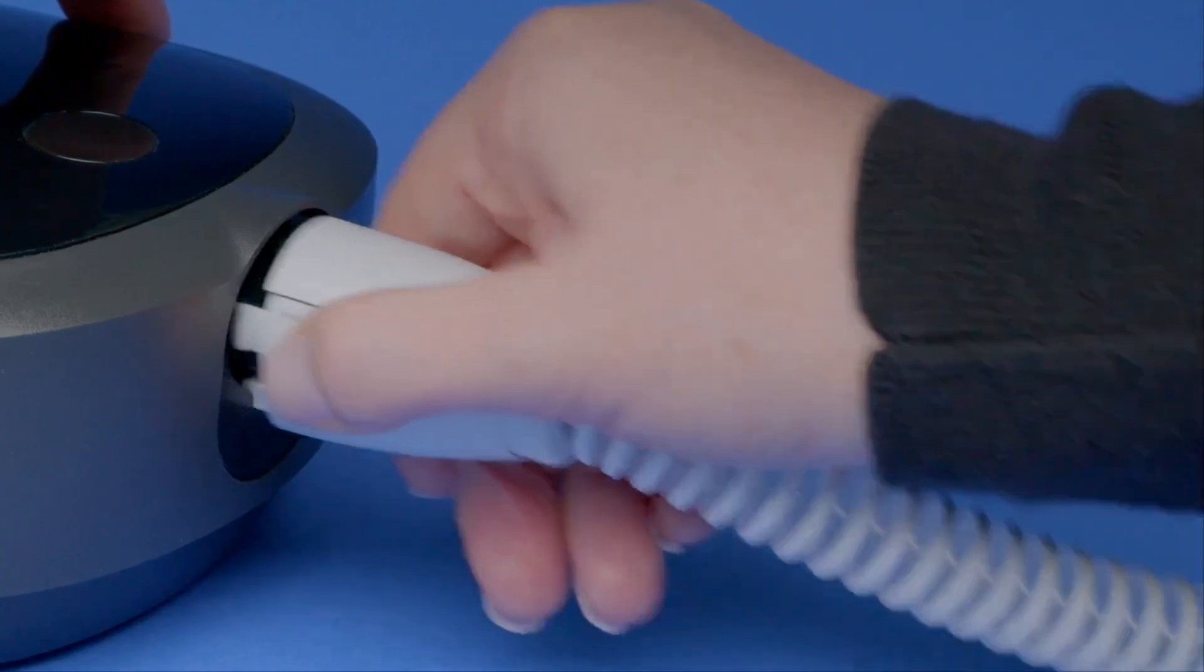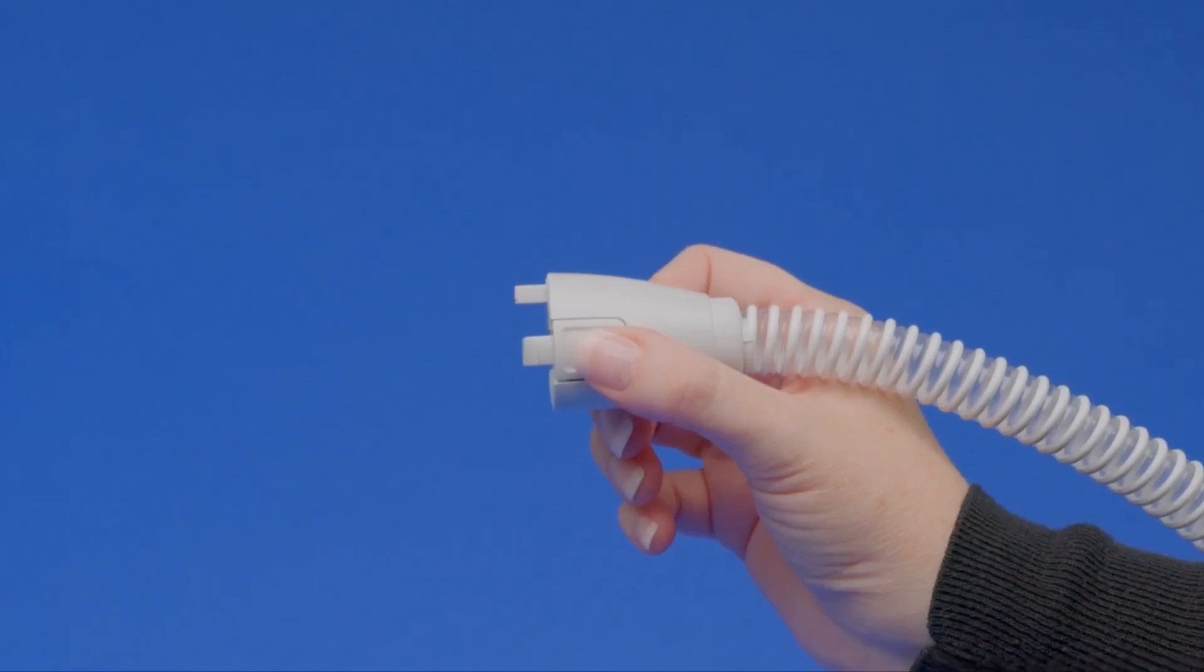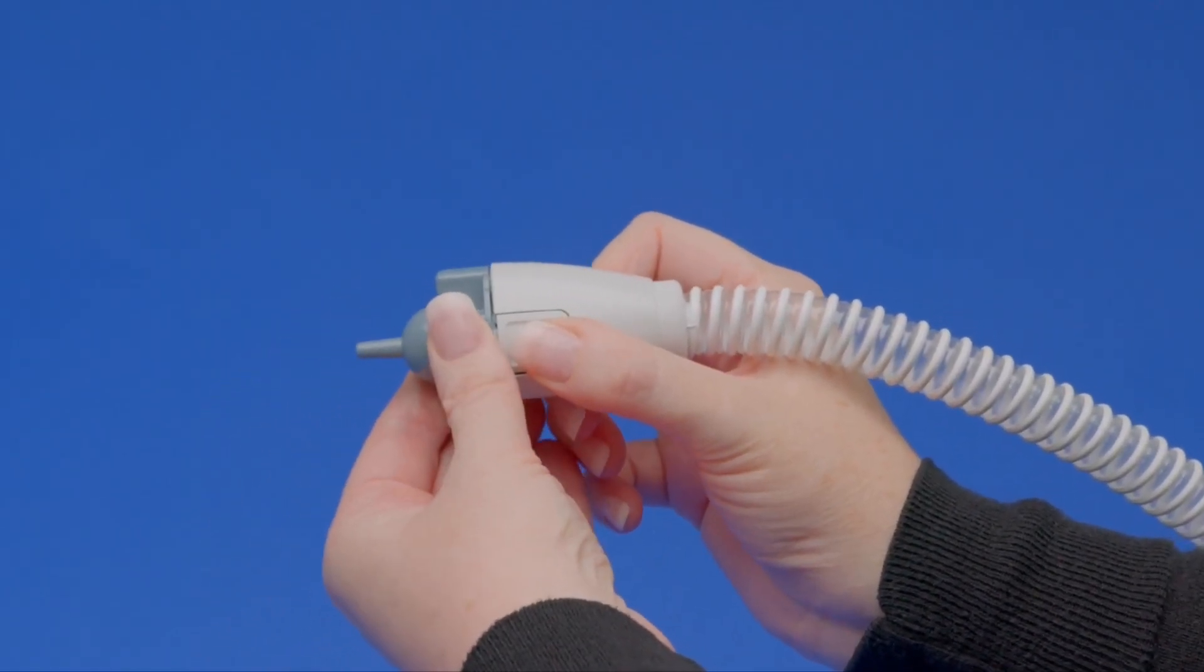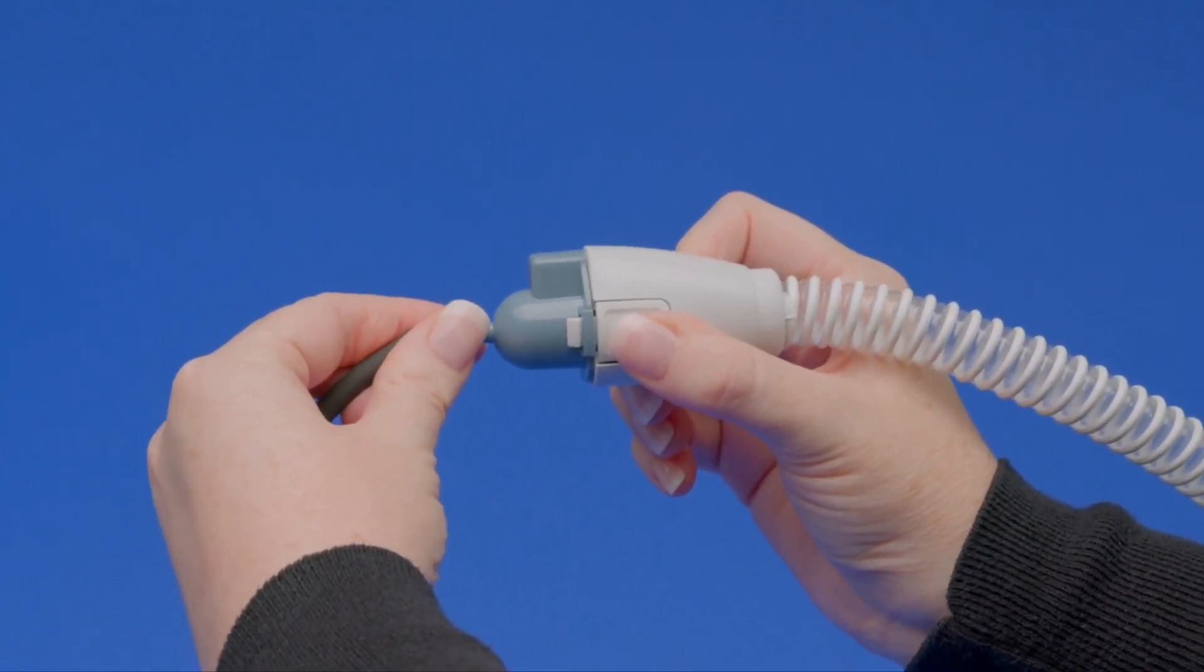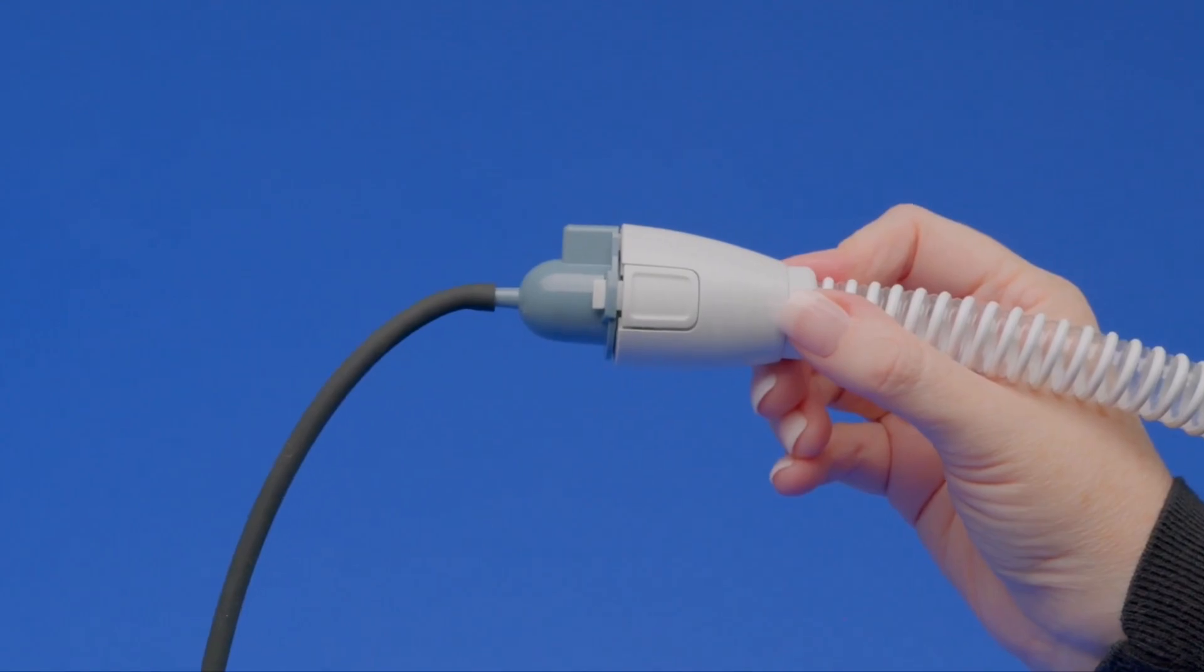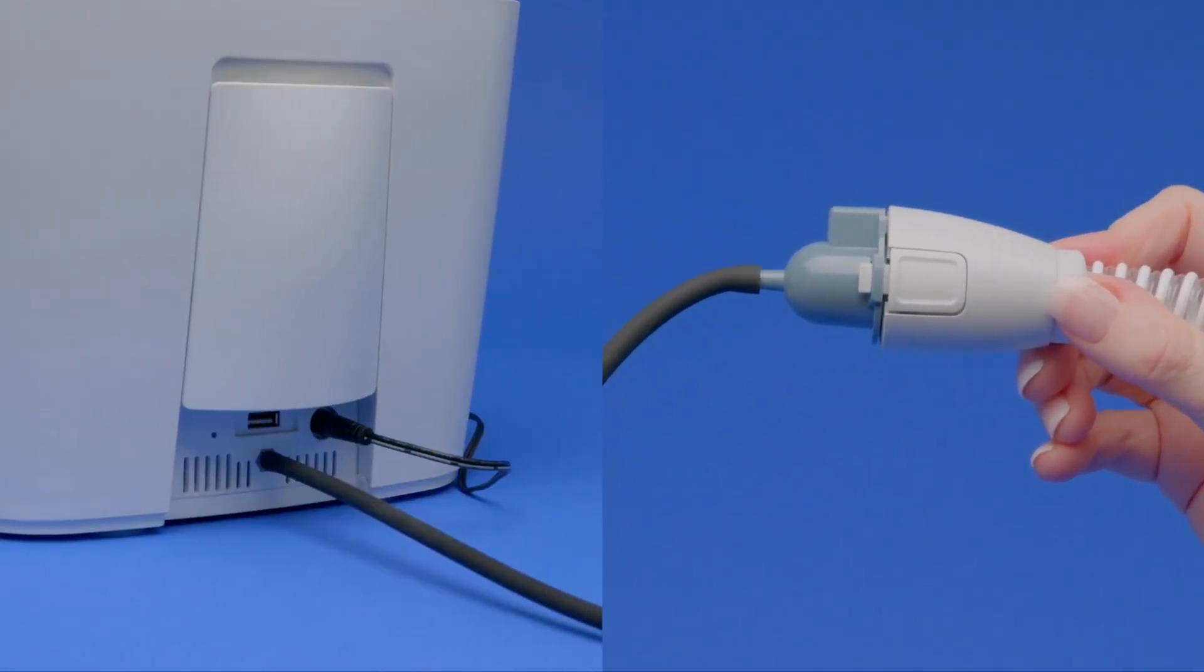Remove the CPAP hose from your sleep equipment and install the SoClean adapter onto the end of the CPAP hose. Connect the free end of the black ozone tube to the nozzle on the SoClean adapter. The other end of the ozone tube must be connected to the back of the SoClean.